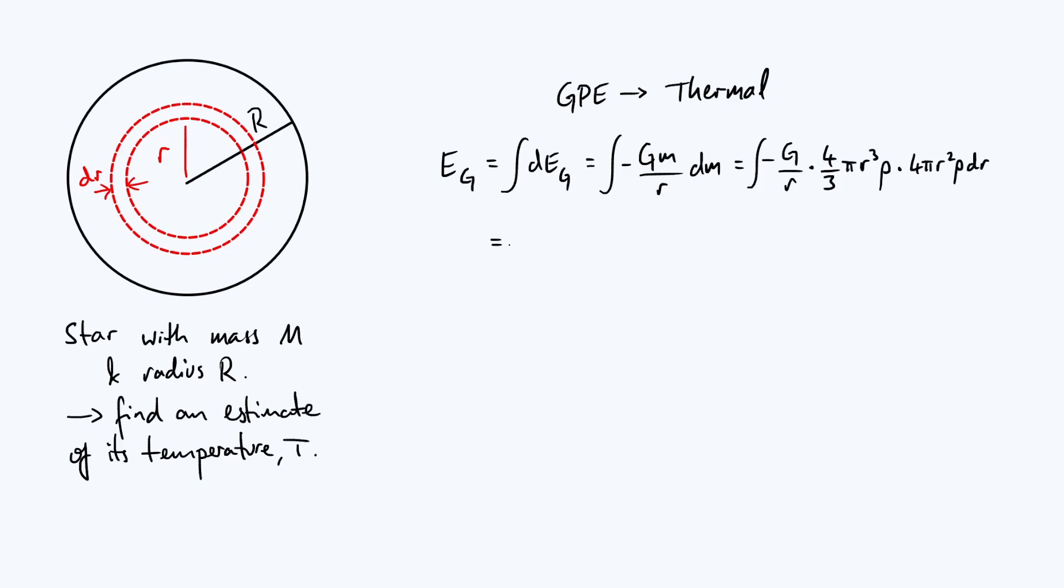So let's make this look a bit nicer by collecting together all the constant terms and bringing them out the front of the integral. You are going to have a numerical factor of minus 16 pi squared over three. You've also got a constant big G and you've got two factors of density. So you've got rho squared. And so the integral itself is just going to be the integral of r to the four with respect to r. We better put some limits on as well. Limits are pretty straightforward because we're building up our star from zero radius up to its final radius, capital R.